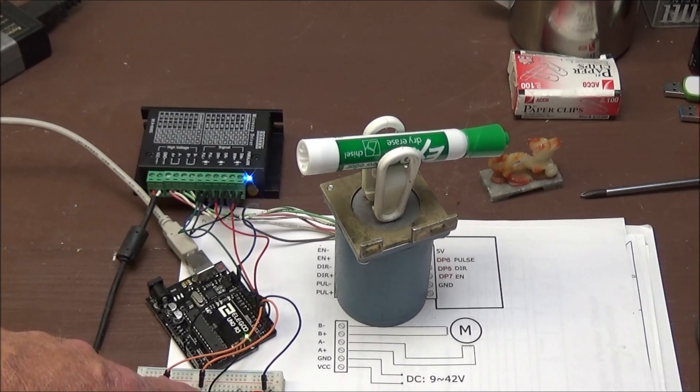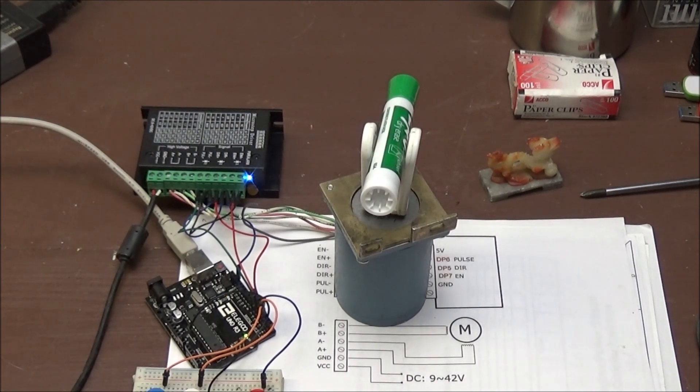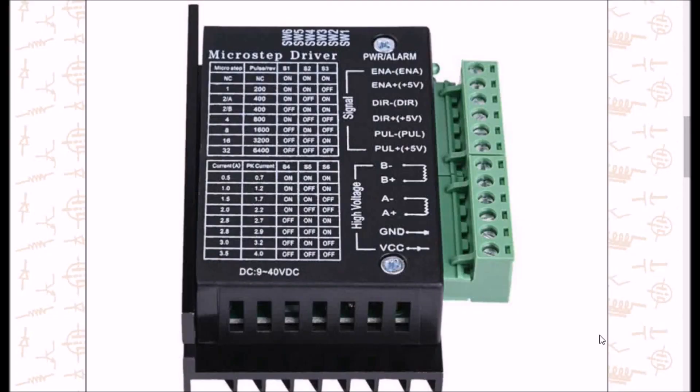All right, here's a blown-up photograph of the TB6600 stepper motor driver. It's not very big and the connections are simple. First of all, we have six input screws in pairs for enable, direction, and pulse. These inputs are completely optocoupler isolated, what that means is there is no electrical connection between the Arduino and the higher voltage circuitry.